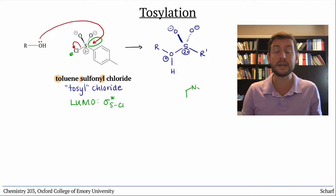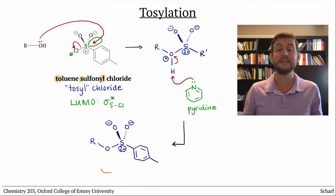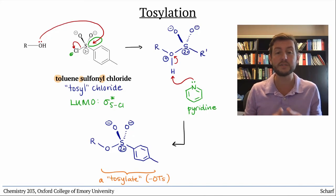But, if a weak base, like pyridine, is present, this unstable situation can be alleviated by deprotonating the oxygen. The product, called a tosylate, is a very good leaving group. Its conjugate acid has a pKa of around zero.